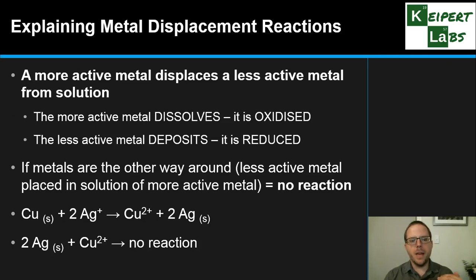So the principle is that a more active metal will displace a less active metal from its solution. We take a more active metal, like copper, and we place it into a solution of a less active metal, silver+. The more active metal, the copper, will dissolve, and then we say that it has oxidized - thinking about those labels we talked about at the start. The less active metal, the silver in this case, deposits. So it is reduced. So it has changed in this way.